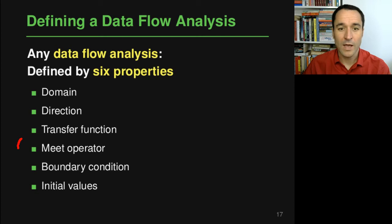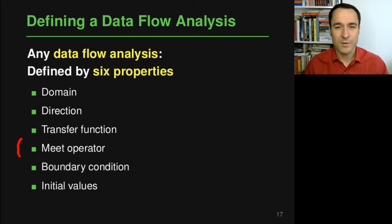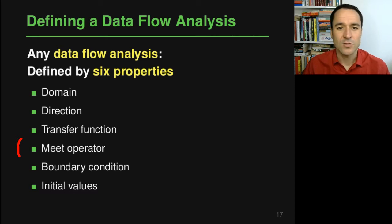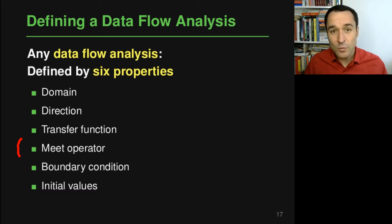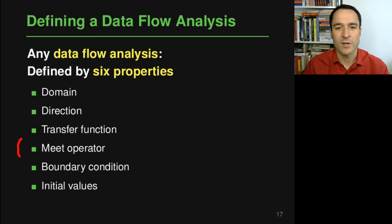We also have to define a meet operator, which basically tells us what happens if the flow of control merges, or if you're reasoning backward, when there is a branch. It tells us what happens if there are two or more incoming statements that need to be somehow combined by the analysis to propagate the information.